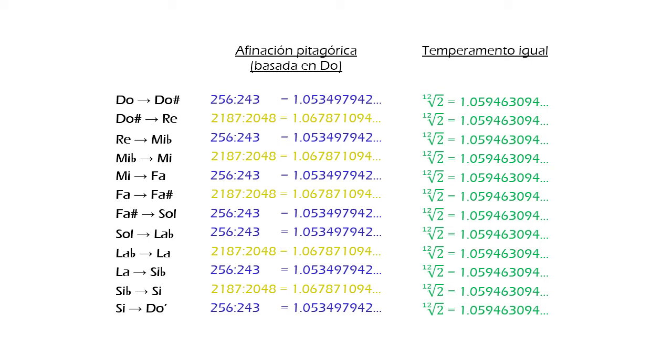It's also important to observe that the Pythagorean ratios oscillate around 1.05946394. That is, the blue ratio is a little smaller, and the yellow ratio is a little larger.